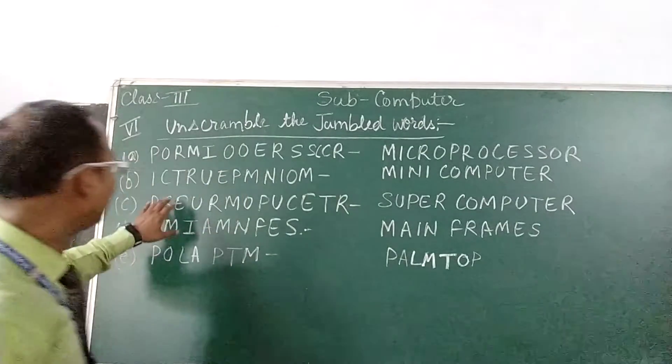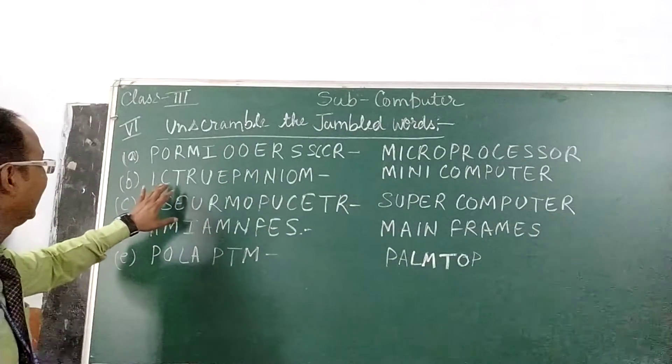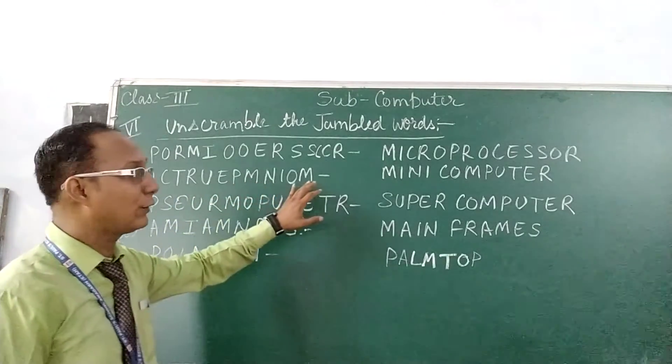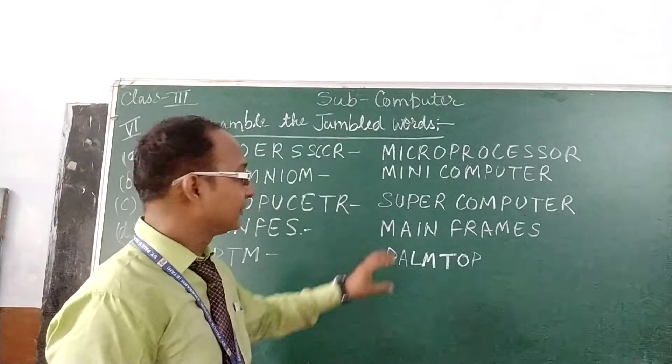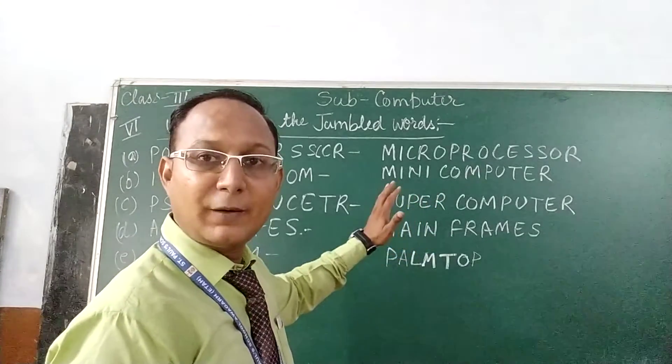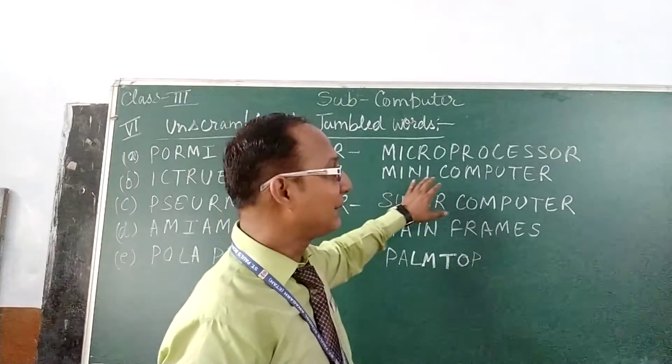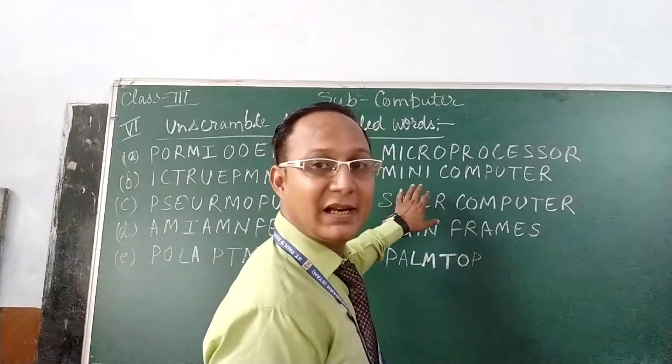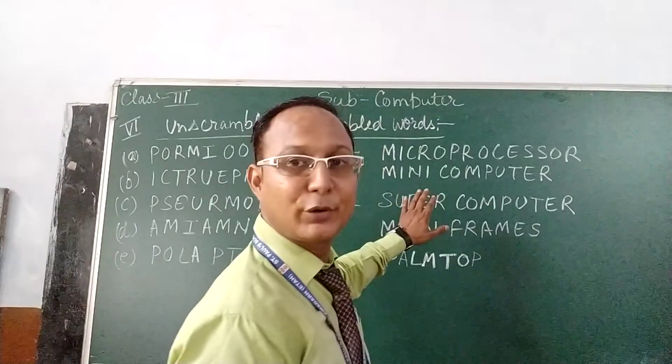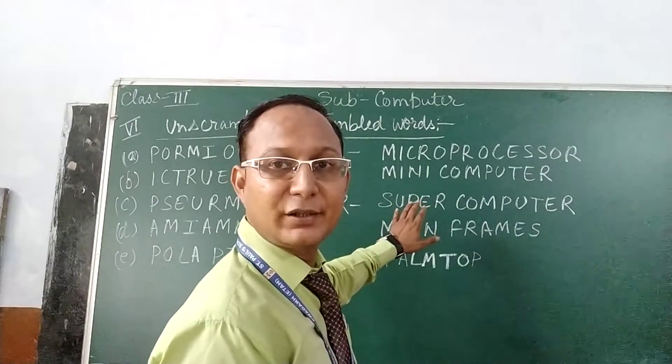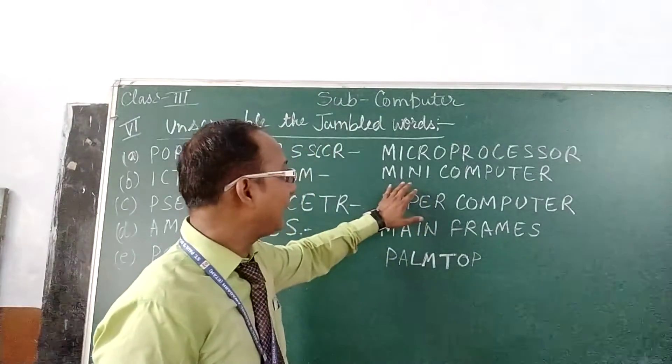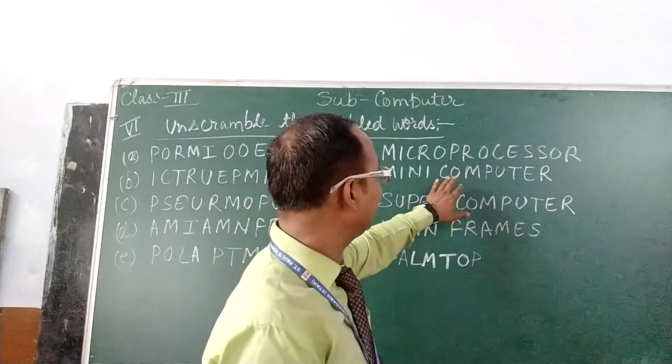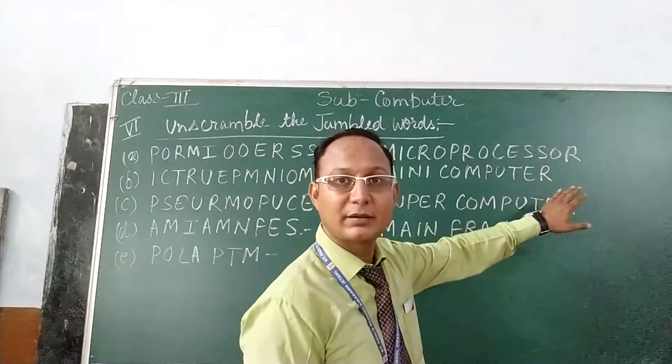Second word given is I C T R U E P N M I N I O N. The correct word that will form from this word is mini computer. Spelling of mini computer I am going to read. Note it down in your books. M I N I, mini. Computer, spelling of computer: C O M P U T E R.